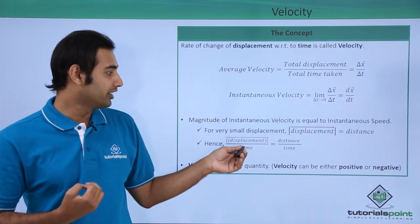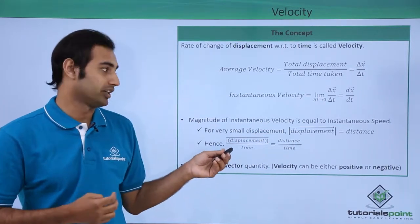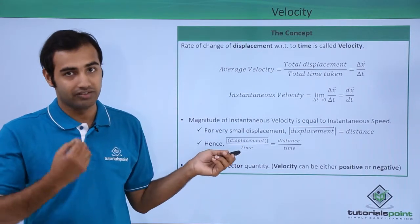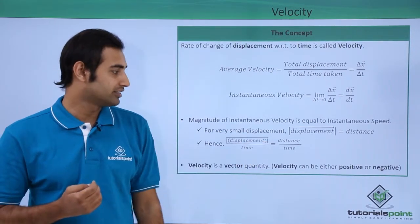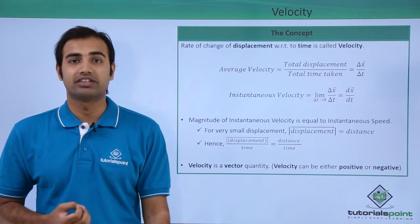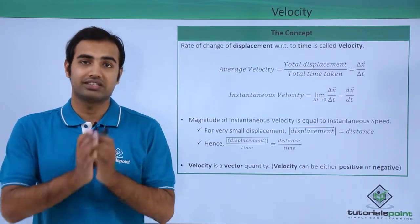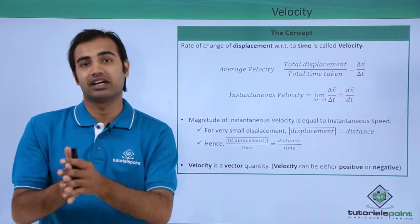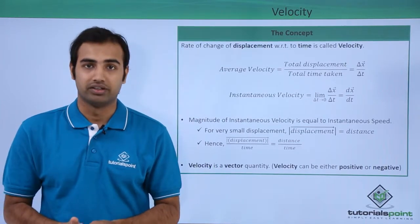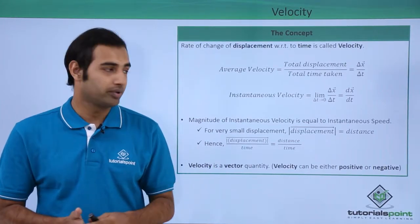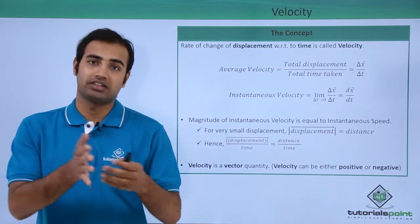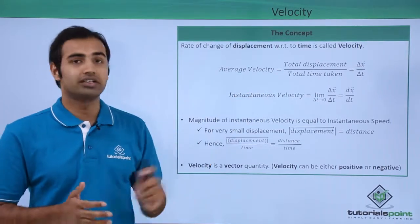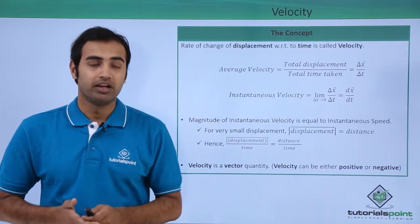So in that situation, displacement's magnitude is exactly equal to distance for that very short period of time. If I divide both sides by that time period, on the left hand side we will have instantaneous velocity and on the right hand side we will have instantaneous speed. So instantaneous velocity's magnitude is exactly equal to instantaneous speed. To compare a vector quantity with a scalar I have to take the magnitude of the vector quantity. I hope these three concepts are very very clear.